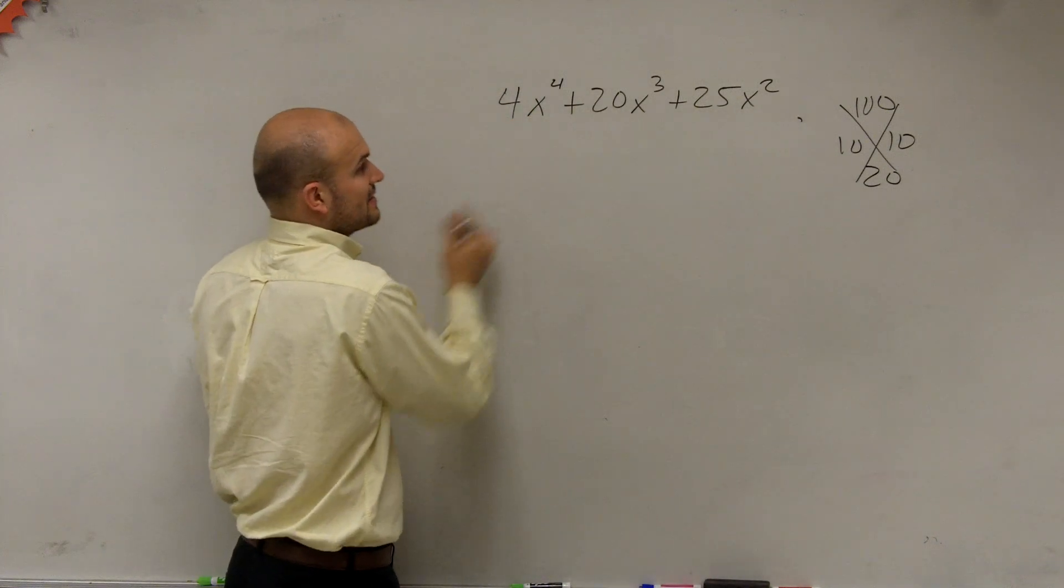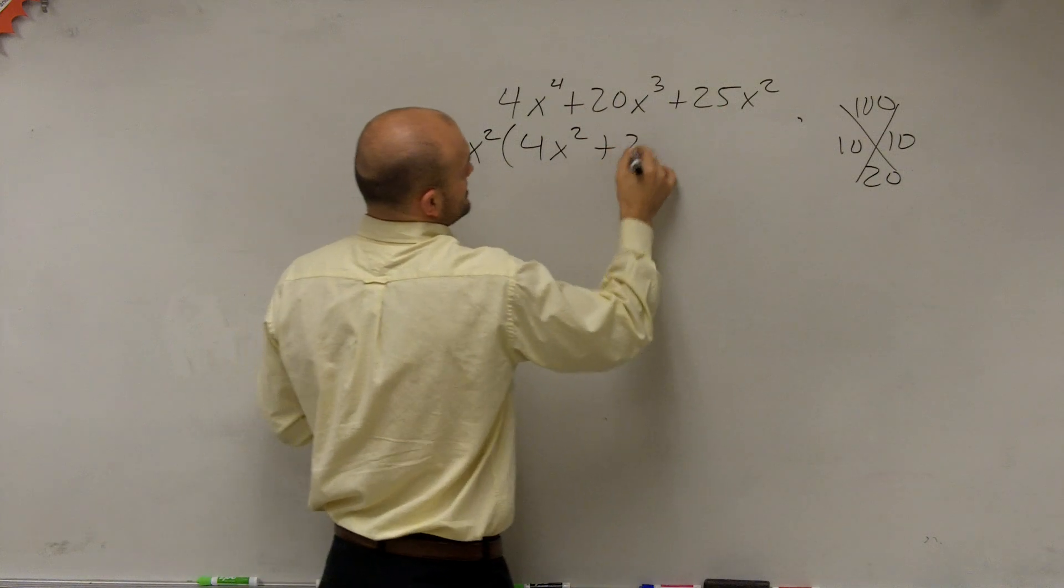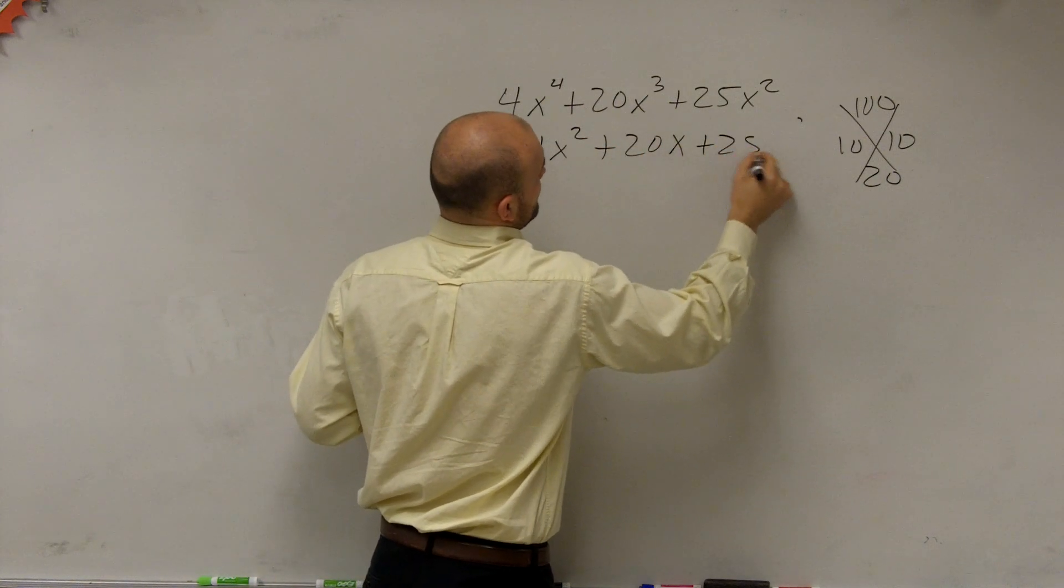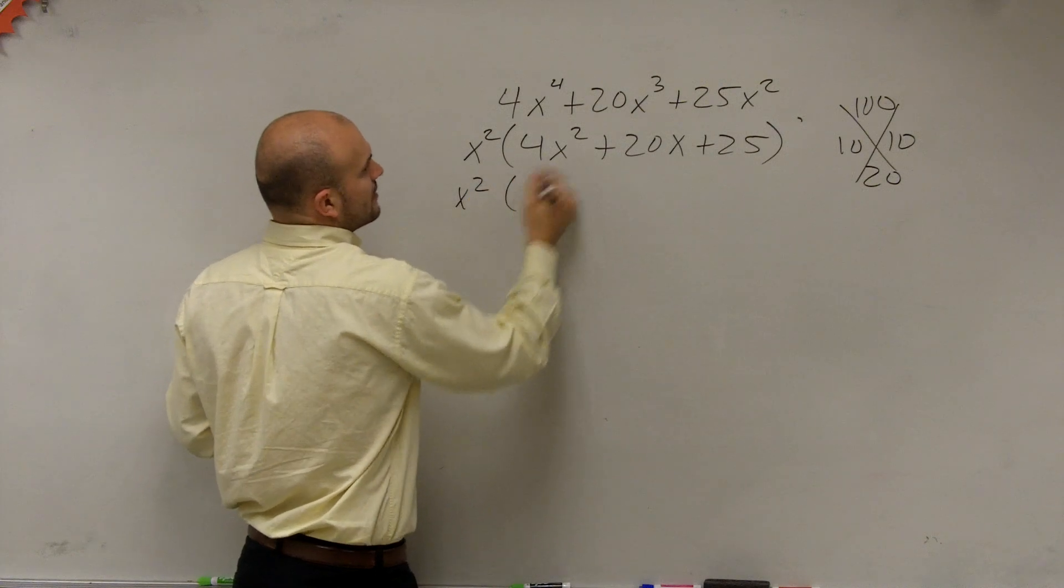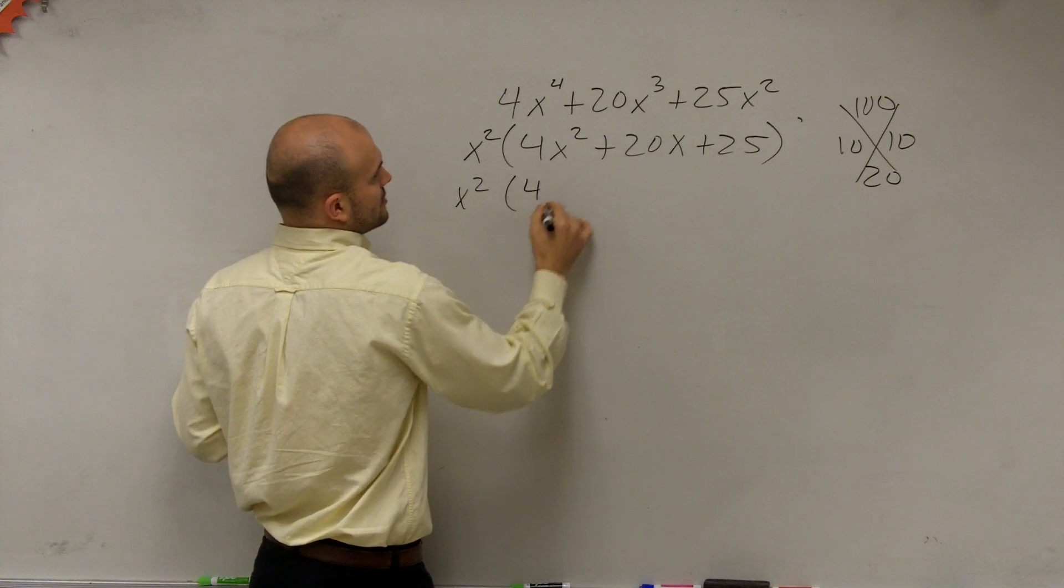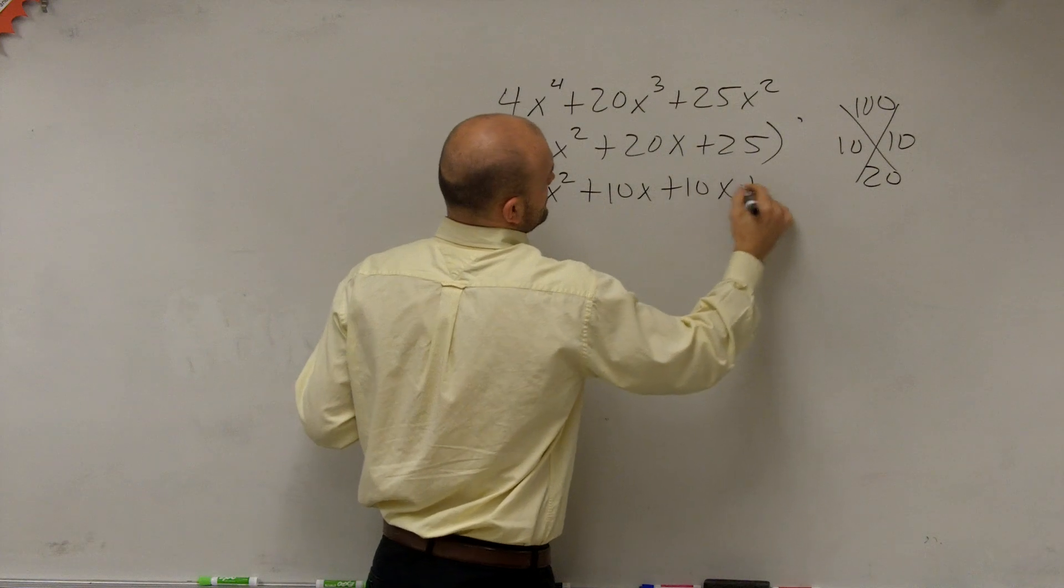Always take out what they have in common, which would be an x squared. That leaves you with a 4x squared plus 20x plus 25. This will still be the same, but now you'd have x squared.